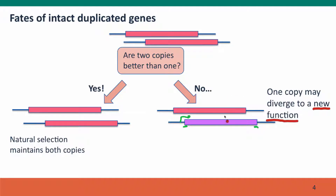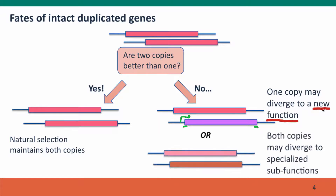Gene duplication creates the potential for a gene to diverge into a new function. Or it may be that both copies diverge, and rather than having one gene that serves a particular function, the cell now has two genes that are very similar but serve specialized sub-functions. The two genes may have divided up the job of the original gene and do it more efficiently because each is more specialized. These are beneficial new gene consequences that can come from what's initially a neutral duplication.